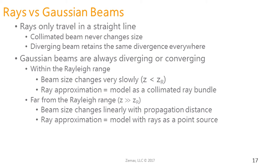Gaussian beams, on the other hand, are always diverging or converging. That said, there are two scenarios where we can use rays to approximate them. Within the Rayleigh range, the beam size changes very slowly, so we can approximate it with a collimated ray bundle. Far from the Rayleigh range, the beam size changes linearly with propagation distance — just like a point source — so we can approximate with rays using a point source. These assumptions are explained in more detail in our 'Simulating Lasers' and 'Laser Applications' webinars.